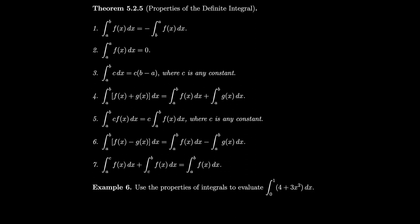Next, we have some properties of the definite integral. We've been assuming a is smaller than b, but there's no reason that has to be true. If we switch and have b first then a, we just put a minus sign there. This makes sense because if delta x equals (b minus a)/n, then switching gives delta x equals (a minus b)/n, which is just negative times (b minus a)/n. That negative gets pulled out of the limit.